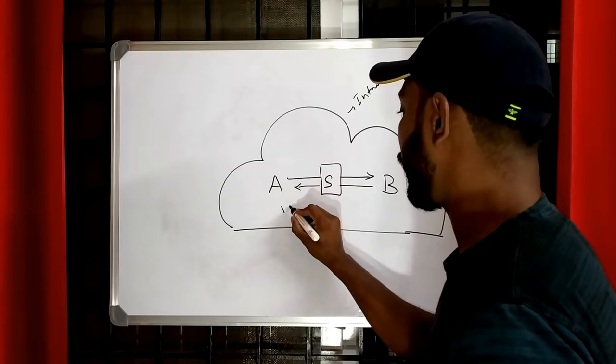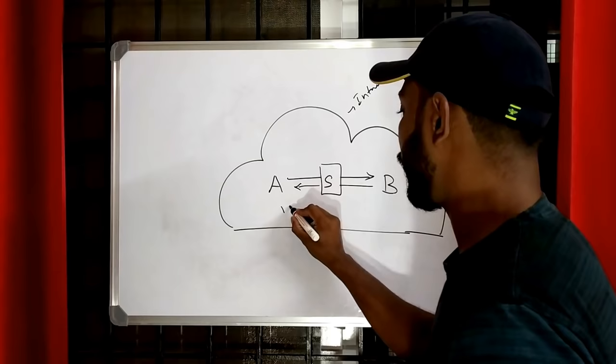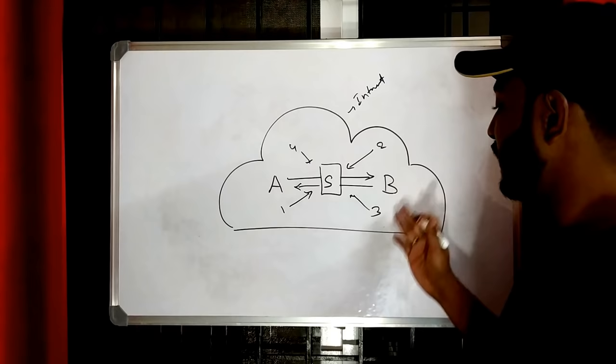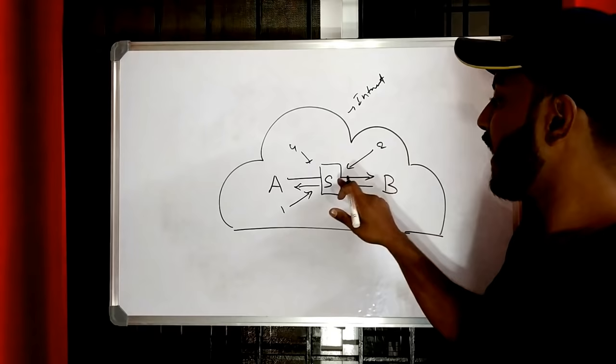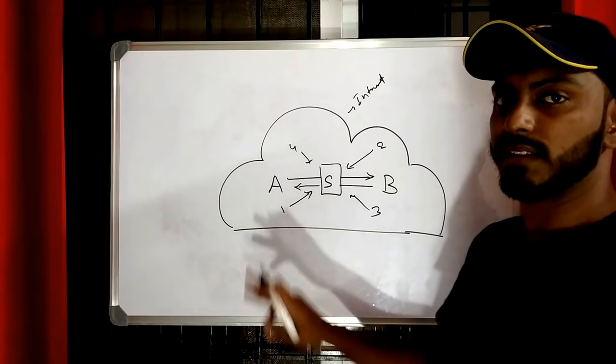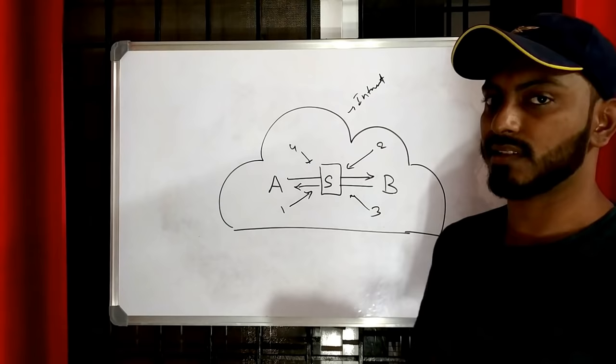Consider we have also connected more clients — one, two, three, four. If client three wants to send a message to client two, what it does is connect to the server, send the message, and the server knows the address of client two and redirects the message to it. Similarly, if client three wants to send a message to client A, it sends the message to the server and the server sends it to client A. This is how a real-time messaging system looks from 10,000 feet high.